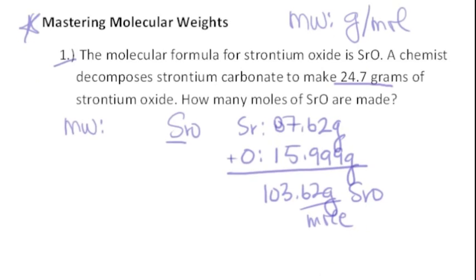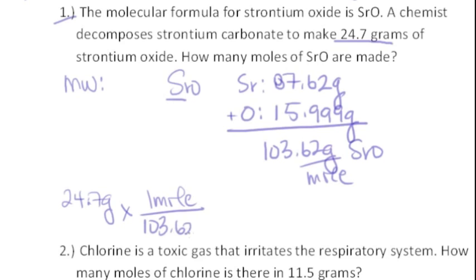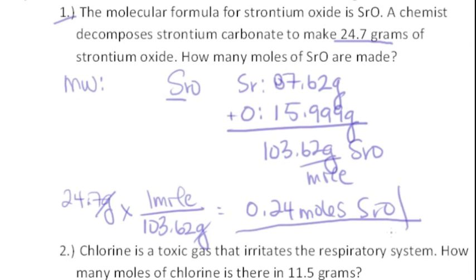Now that we know we started with 24.7 grams, we just need to convert this to moles — and that's what the molecular weight is for. You just divide by the molecular weight, and you'll find that grams cancel. The answer is that there are 0.24 moles of strontium oxide.